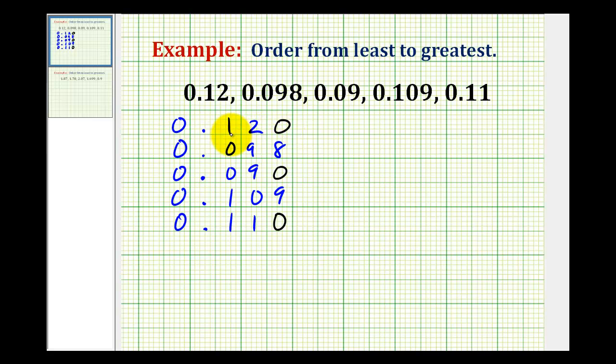For example, this first decimal was given as 0.12, which is equivalent to 0.120.